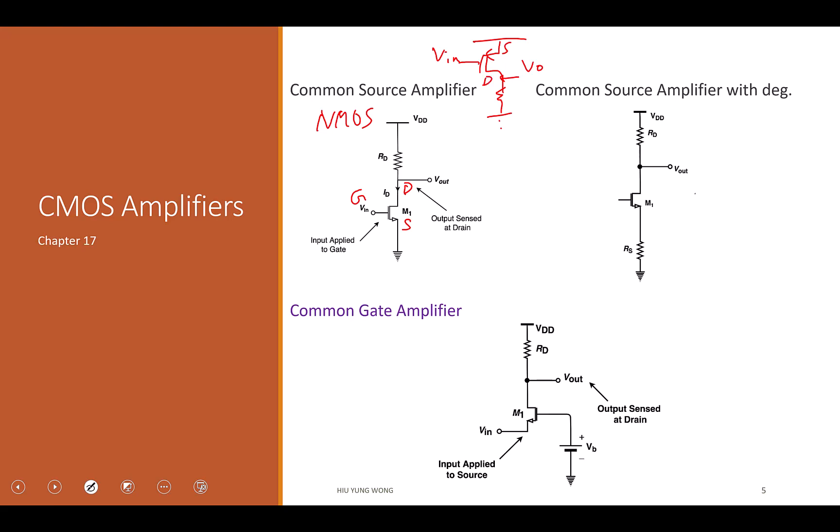Because we know that if we try to draw the small signal circuit of this PMOS circuit, it's exactly the same as this one. And then if you try to solve the KCL, KVL, you get exactly the same answer. Do you agree with this? Is this clear?